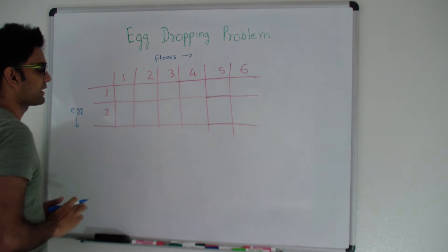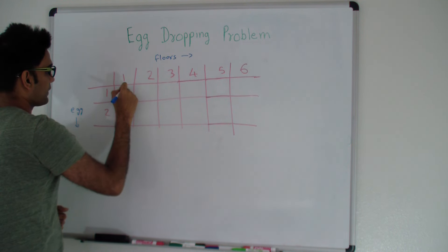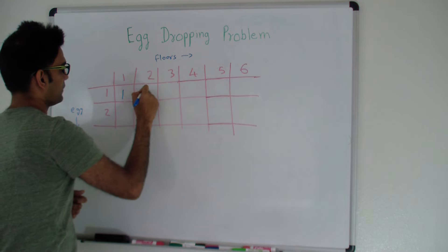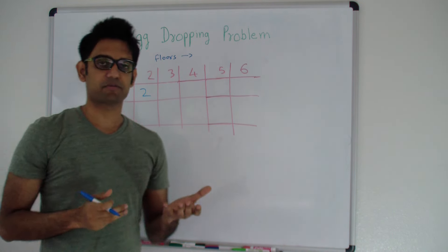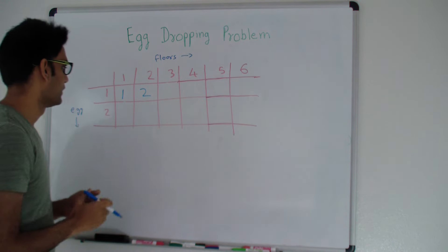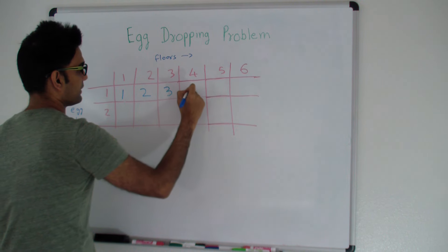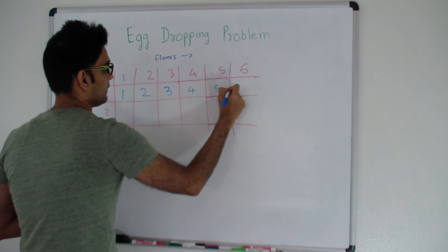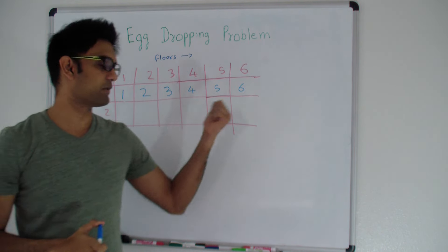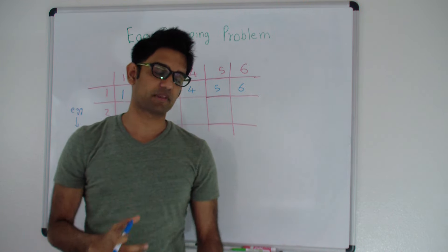If I have 1 floor and 1 egg, the minimum number of attempts is 1. If I have 2 floors and 1 egg, it'll be 2 because I'll try from the first floor — if it breaks I know it's 1, but if it doesn't break I have to go to the second floor. Similarly, for 3 floors and 1 egg it's 3, and for 6 floors and 1 egg it will take 6 attempts in the worst case.